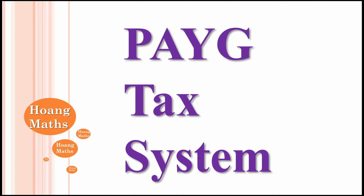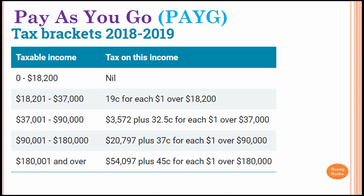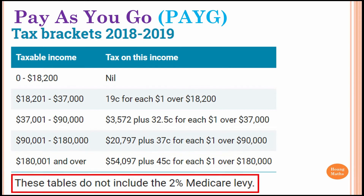You can download this lesson by clicking on the link under the description below. Pay as you go tax depends on each individual's income, according to the tax table. After paying tax, we also need to pay 2% for the Medicare levy, which covers hospital visits and seeing doctors.